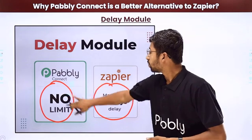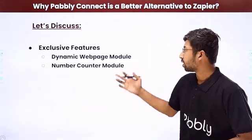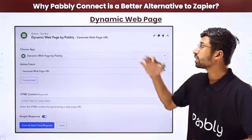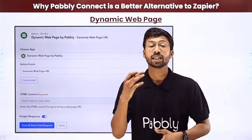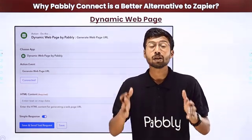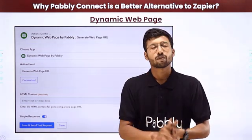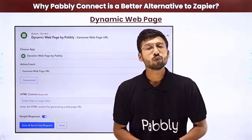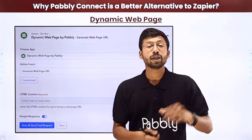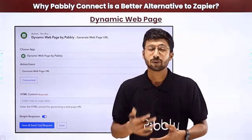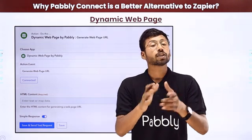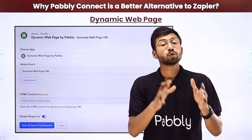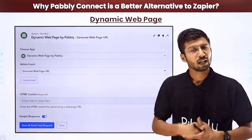Now let's talk about exclusive features: the dynamic webpage module. Using this module, you can use data from your automation workflow to generate dynamic web pages. For example, if you're receiving a payment via a payment gateway, you can use the customer details to generate a dynamic web page with a ticket and deliver it to the customer.